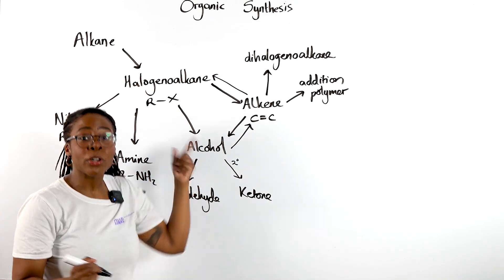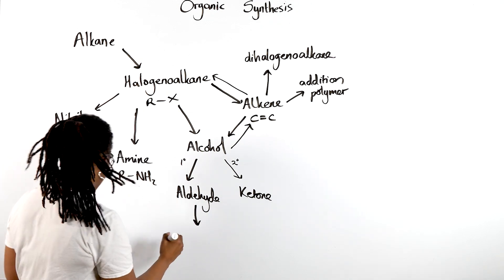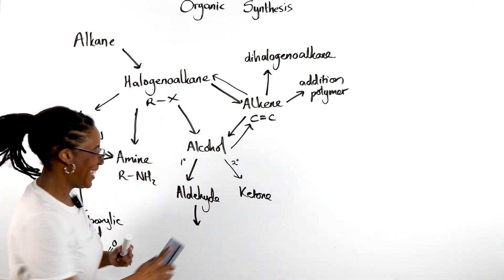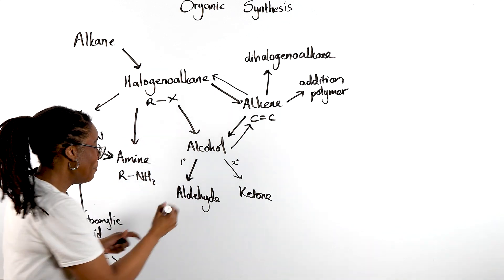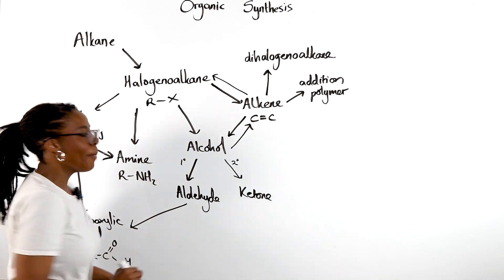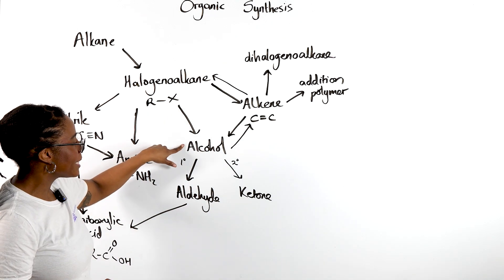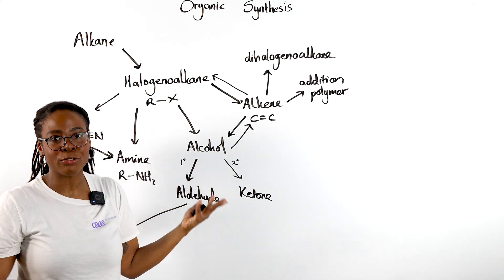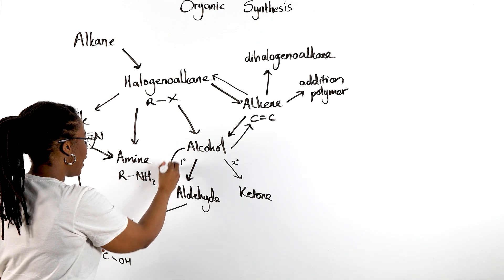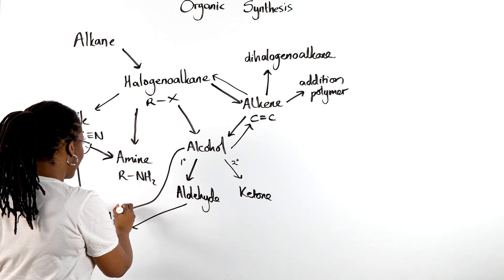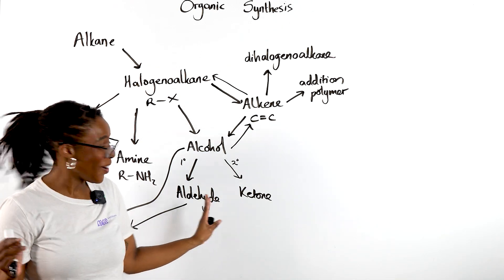This aldehyde we know can undergo further oxidation to give us a carboxylic acid. Or if we just heat this primary alcohol under reflux with excess oxidizing agent, we can go from our alcohol directly to our carboxylic acid.